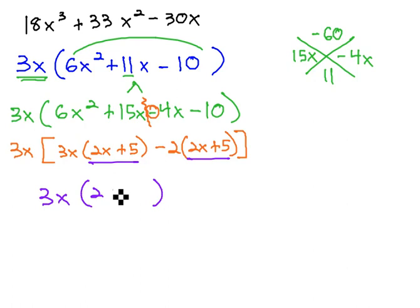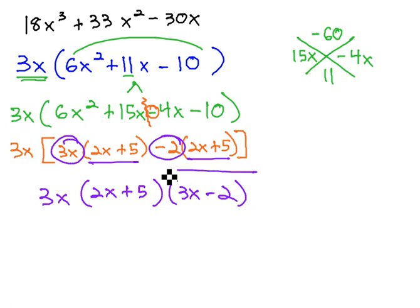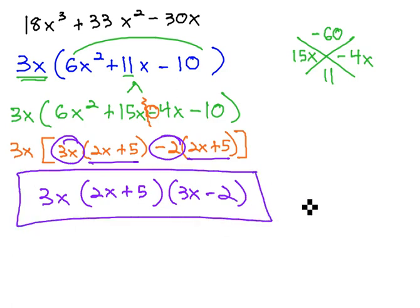Keep the GCF out front, the matching factor 2x plus 5, and the other factor 3x minus 2. We have now factored our expression.